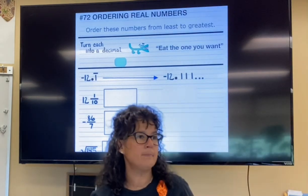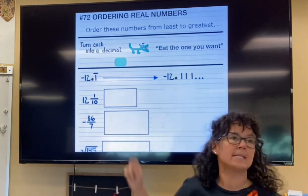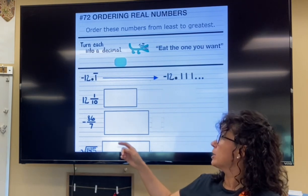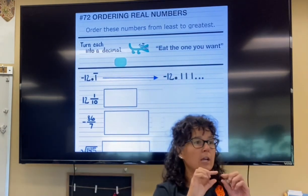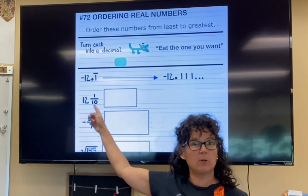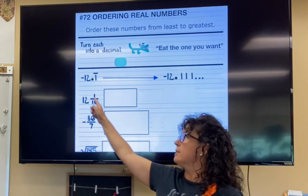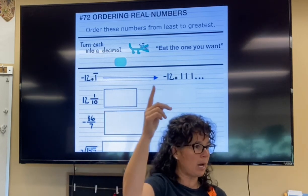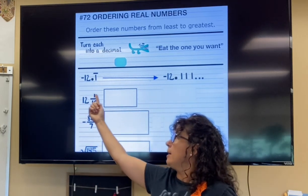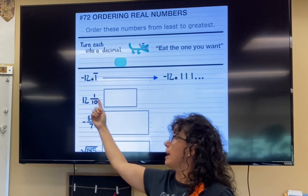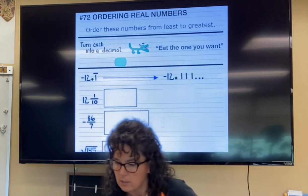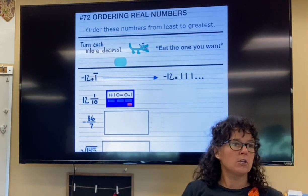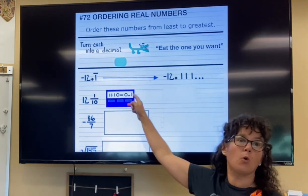Then the next one, 12 and 1 tenth. If you want to turn that into a decimal, what you're going to do is grab your calculator and first just turn the fraction part into a decimal. So I'm going to do 1 divided by 10. When you read a book from left to right, we have 1 in the next line divided by, next line, 10. So if you take 1 and divide it by 10, your calculator is going to say 0.1.